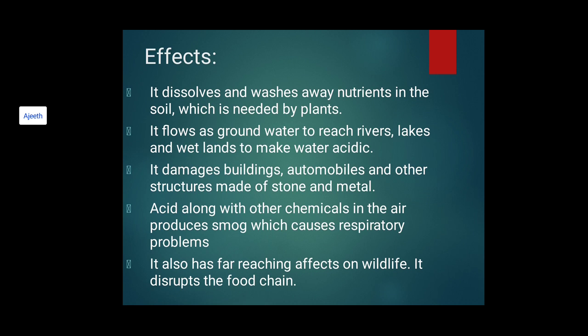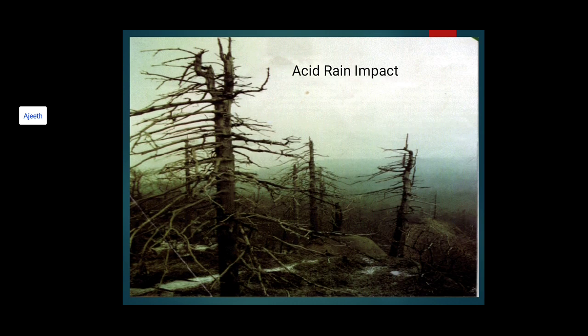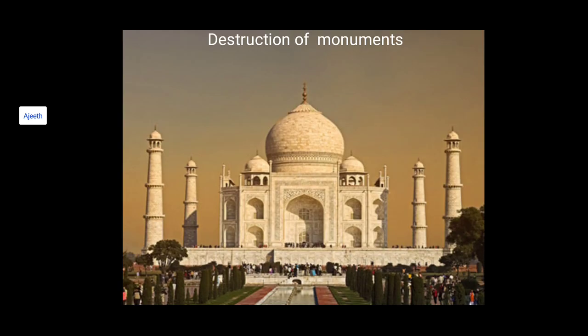Smog, which is smoke combined with fog, also has far-reaching effects on wildlife and disrupts the food chain. We can see images of how wildlife is affected — leaves are corroded and trees are dead. There is also destruction of monuments: the Taj Mahal, made of white marble, has been significantly affected because of an industry situated nearby that contributes to acid rain in that area.